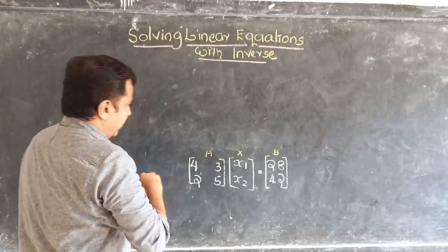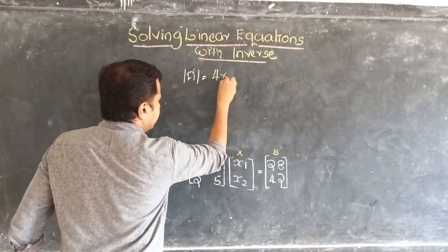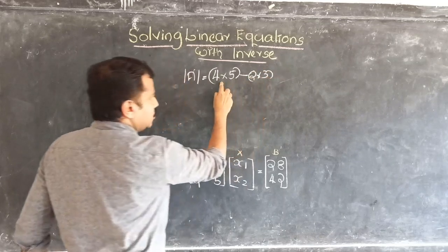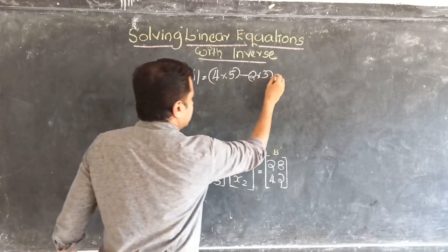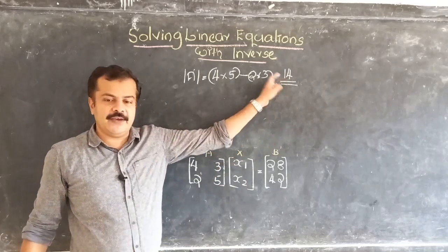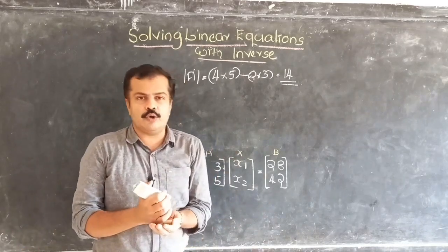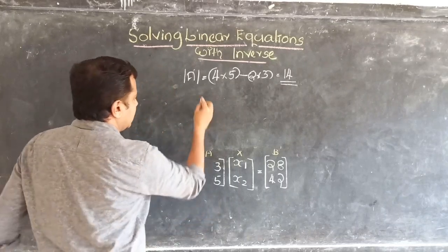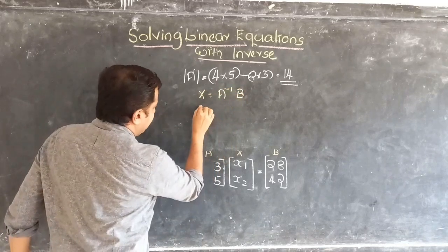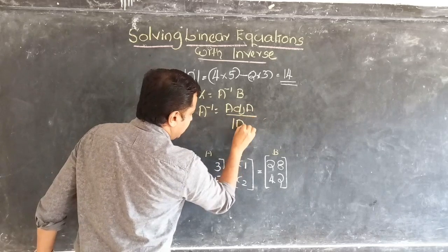Let us calculate the determinant of A. Determinant of A equals 4 into 5 minus 2 into 3, which is 20 minus 6, equal to 14. We confirm it is a non-singular matrix, so we can apply x equals A inverse into B. A inverse is adjoint of A divided by determinant of A, and we have already calculated the determinant as 14. Our next task is to calculate the adjoint of A.